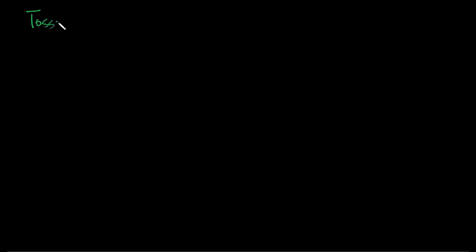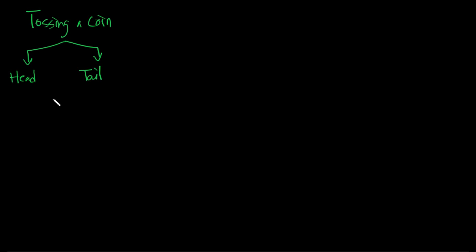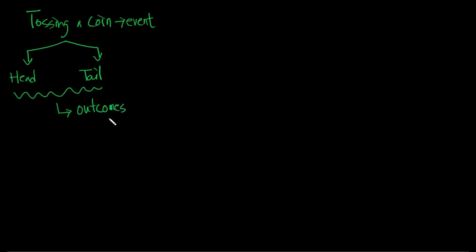Let's take an example of tossing a coin. If I toss a coin, I will get either a head or a tail — these are the only things which can happen. So tossing a coin is an event, and head and tail are the outcomes. This is just to make you familiar with the terminology: every event has an outcome.